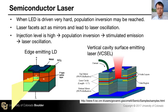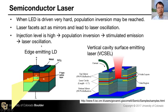As shown in the third bullet, you reach a very high injection level by driving a very high current, then you reach population inversion that results in stimulated emission, and that stimulated emitted photon bounces back and forth and you get laser oscillation.